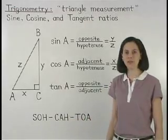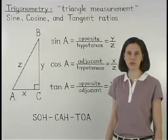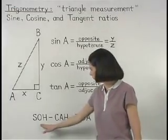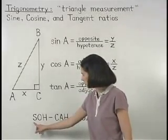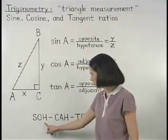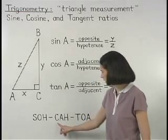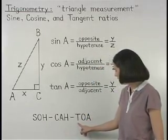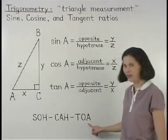An easy way to remember the sine, cosine, and tangent ratios is to use the word SOCOTOA. Sine is opposite over hypotenuse, cosine is adjacent over hypotenuse, and tangent is opposite over adjacent.